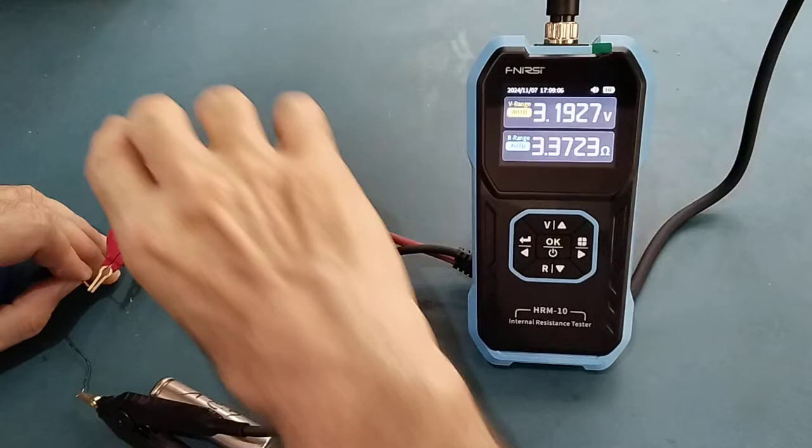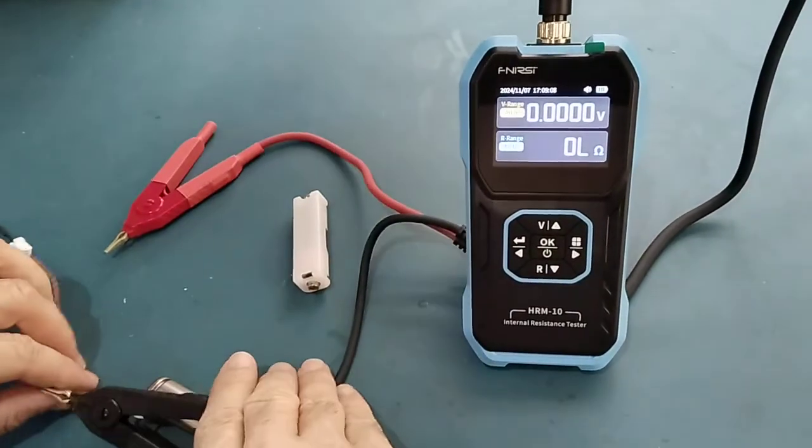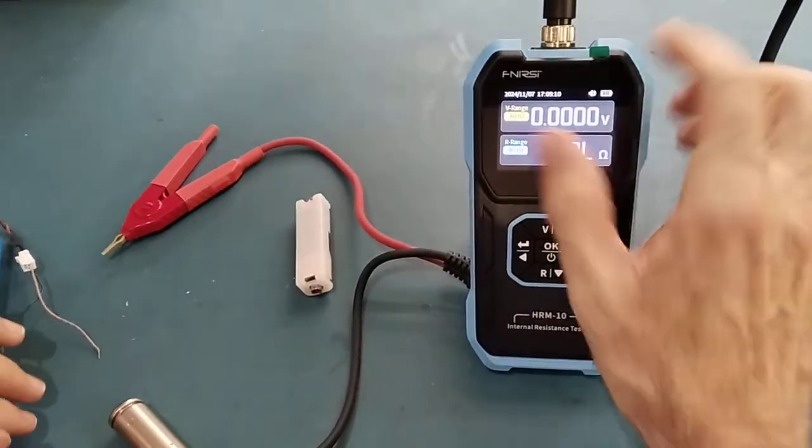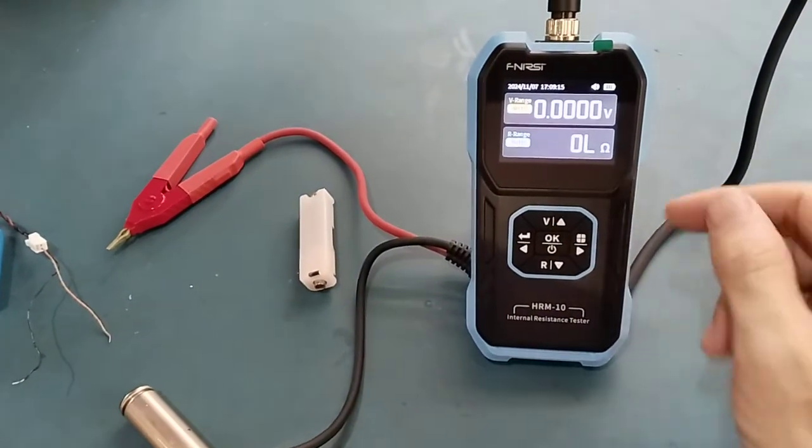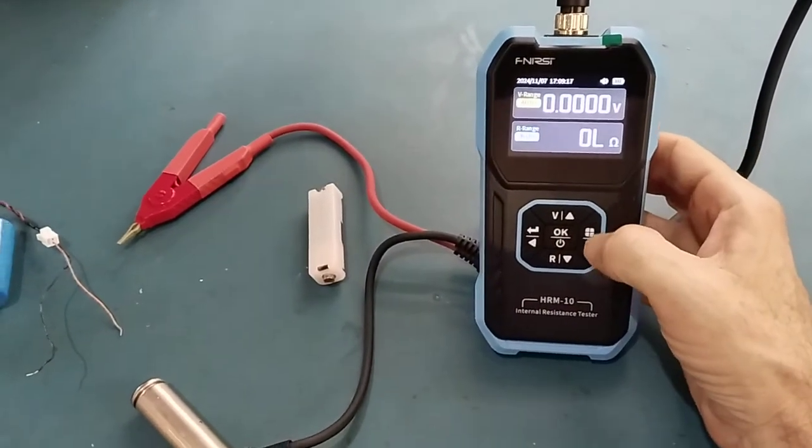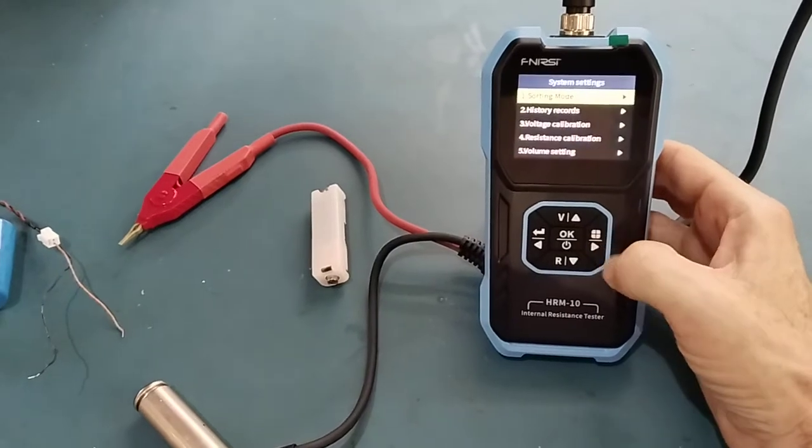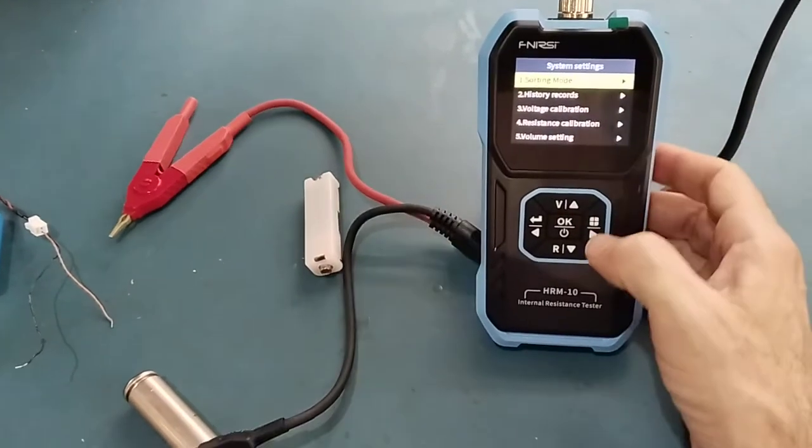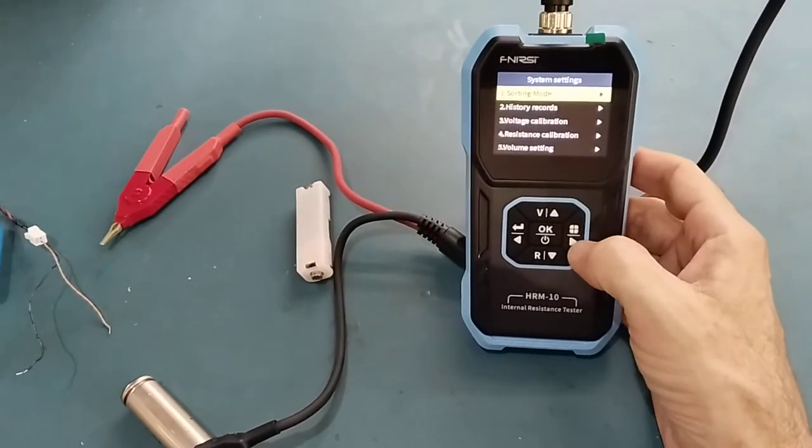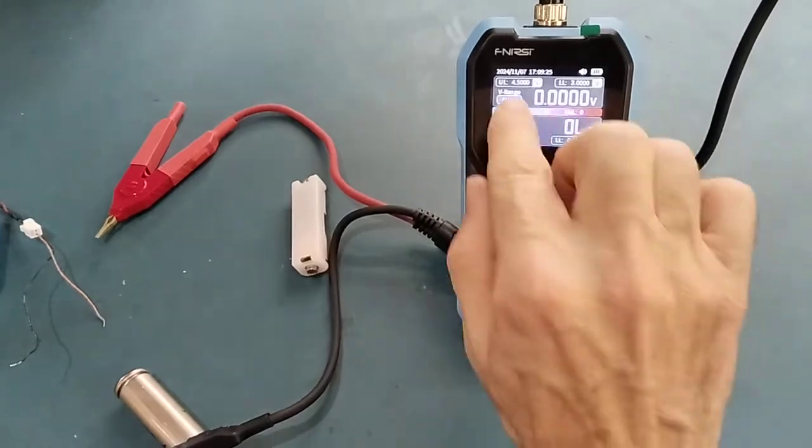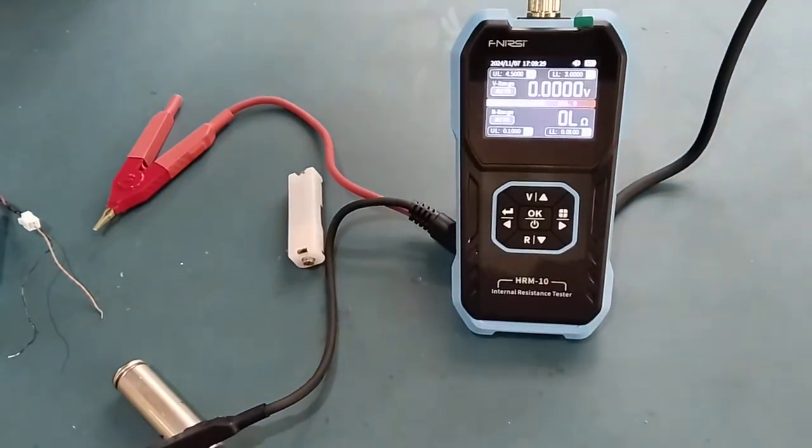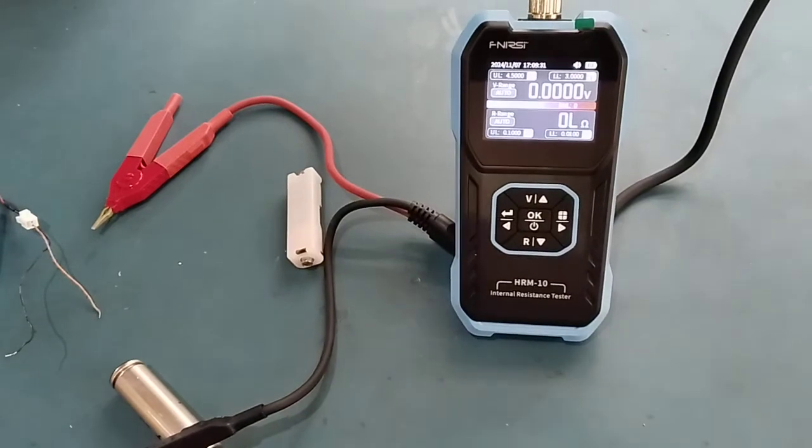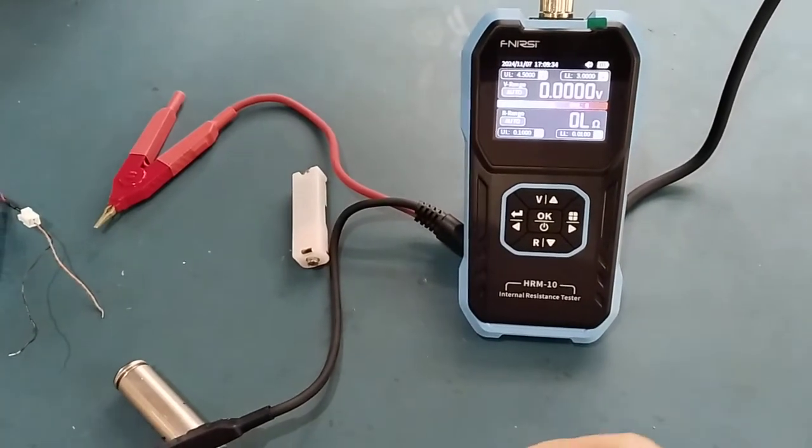You can also use this meter to automate tests for batteries. For that, you enter the menu and go into sorting mode, then set the criteria. In a production line setup, you can quickly go through batteries and sort them according to good and bad.